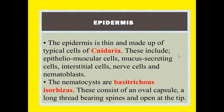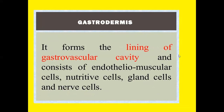The epidermis is thin and made up of typical cells of cnidaria. These include epitheliomuscular cells, mucus-secreting cells, interstitial cells, nerve cells, and nematoblasts. Nematocysts or cnidocytes include isorhiza, consisting of an oval capsule with a long thread bearing spines, open at the tip. The gastrodermis forms the lining of the gastrovascular cavity and consists of nutritive cells, gland cells, and nerve cells.